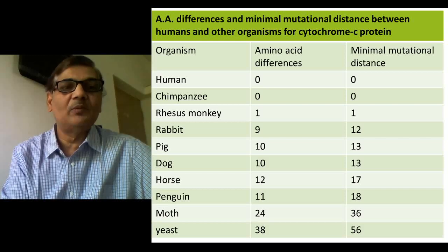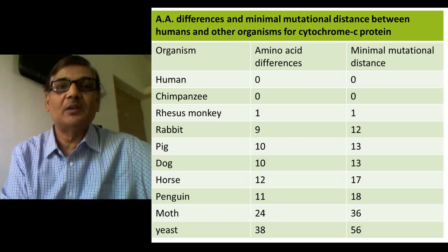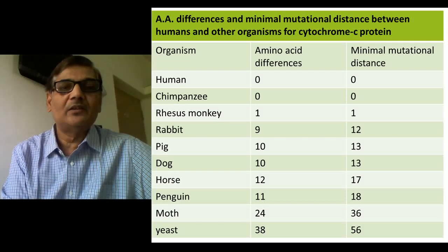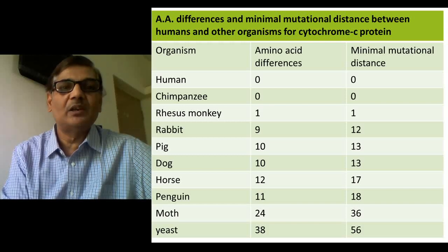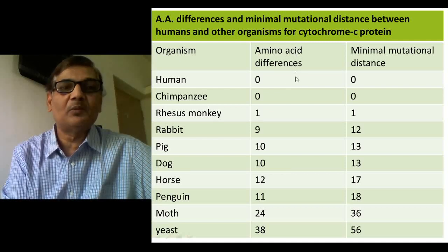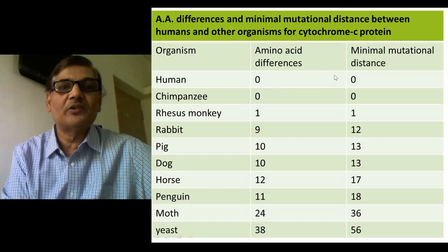In this particular table, you can see amino acid differences and minimal mutational distance between humans and other organisms for the cytochrome C protein. Cytochrome C protein is made up of nearly 100 amino acids — in our case, 104 amino acids. We can compare our amino acid sequence of this protein with that of other organisms, looking at both the amount of amino acid differences and the amount of minimal mutation that has occurred in its gene.